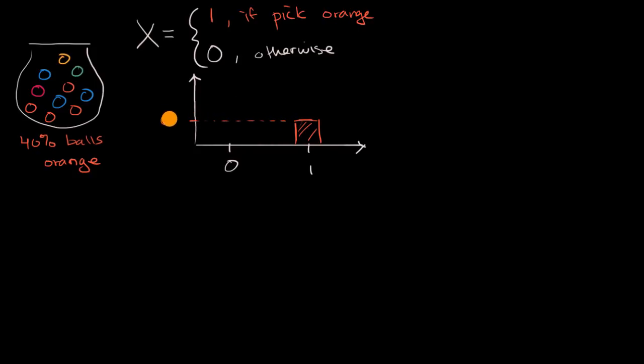So that's 0.4 right over there. And there would be a 60% chance, or a 0.6 probability of getting a zero. So this right over here, just trying to hand draw it. So this would be 0.6 probability of getting a zero. So we could call this the probability distribution for x.